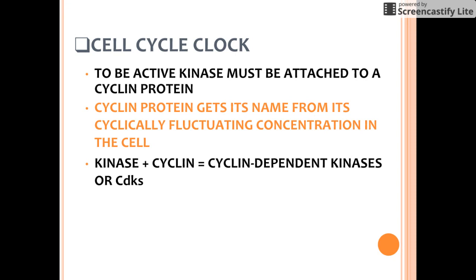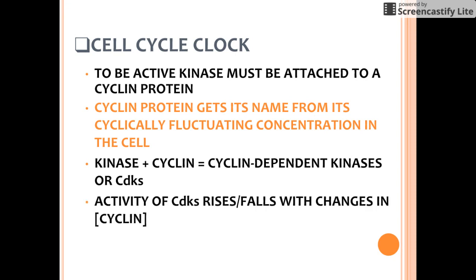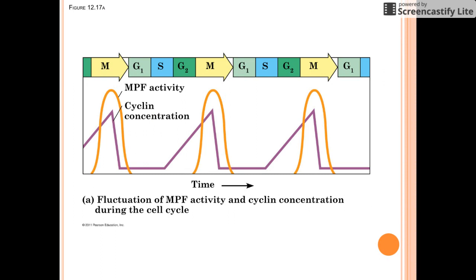The activity of the CDK rises and falls with changes in the concentration of its cyclin partner. In order for this kinase to be active, it has to be attached to a protein called a cyclin, forming the complex we call the CDK. Here's another graphic showing the fluctuation. Notice that MPF — which we'll talk about in just a second — when it's at its highest, the cell can continue on through the cell cycle.